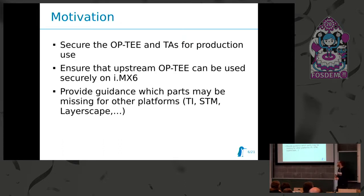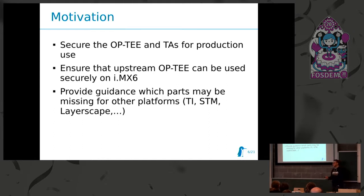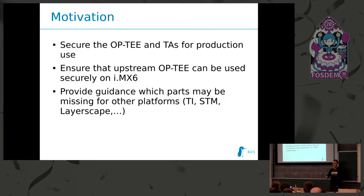The motivation for this talk is that we want to secure OPTI and the trusted applications running within it for production use — to be reasonably sure we are not leaking data in production. We want to ensure upstream OPTI can be used securely on IMX6, so all changes go upstream rather than living downstream. I also want to provide guidance on which parts may be missing for other platforms, because I specifically focus on IMX6 and can show problems even if I don't know all solutions for TI or STM platforms.